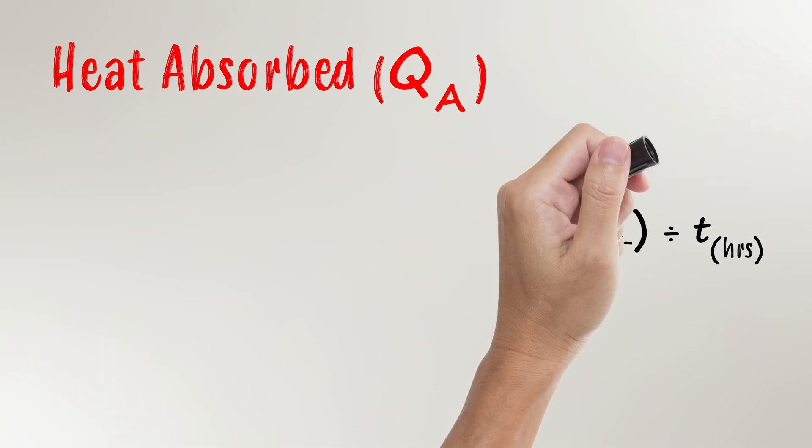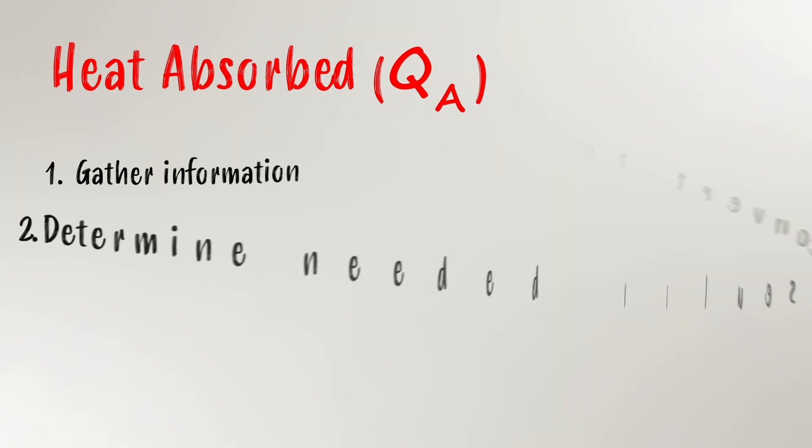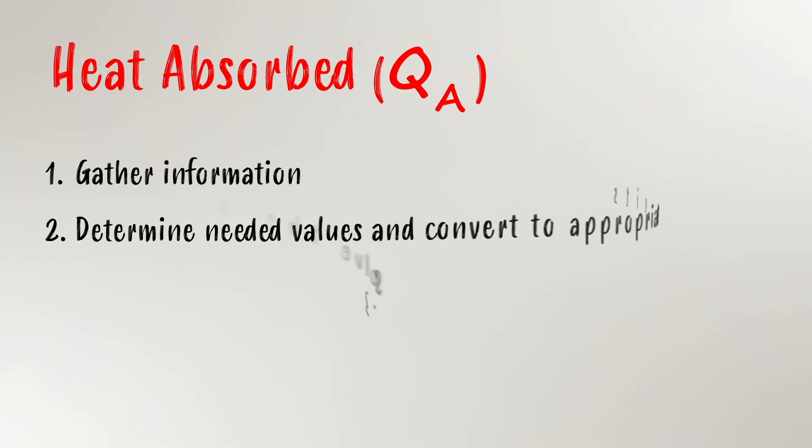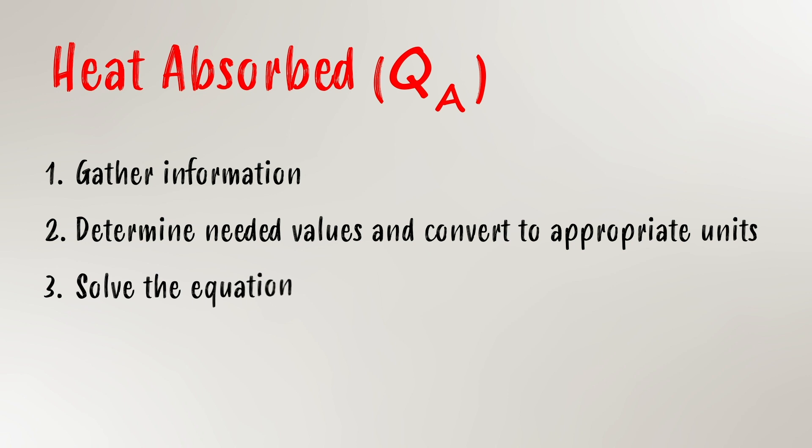In order to solve for QA, there are three simple steps you should follow. Number one, gather information. Number two, determine needed values and convert to appropriate units. Number three, solve the equation. Don't get overwhelmed — it's easy. I promise I'll walk you through it step by step.